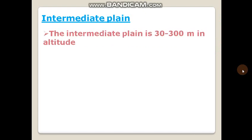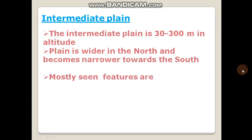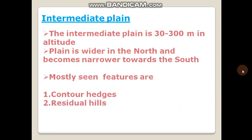The intermediate plane is 30 to 300 meters in altitude. The plane is wide in the north and becomes narrow towards the south. In the intermediate plane we can see contour heads, residual hills, rivers, flat planes, and plains.